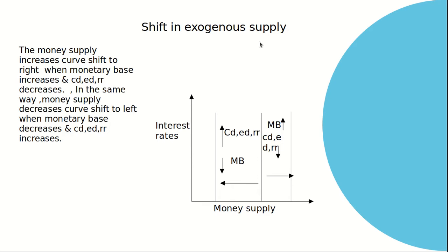Shift in exogenous supply. The interest rate is on one axis and money supply on the other. When there is an increase in money supply, there will be an increase in the monetary base and the curve will shift to the right. The money supply curve shifts to the right when the monetary base increases and the currency-to-deposit ratio, excess reserve ratio, and required reserve ratio all decrease. As discussed in the previous session, when the currency-to-deposit ratio declines, money supply increases and the curve shifts to the right.